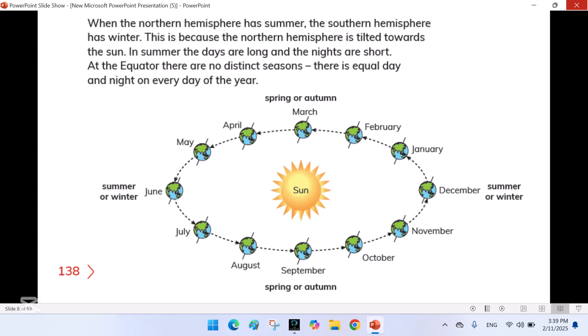At the equator, there are no distinct seasons. There is equal day and night on every day of the year.